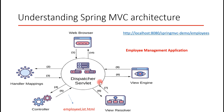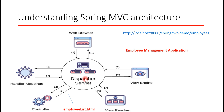In step six, the DispatcherServlet gives the view name to the View Resolver to get the actual view location. In step seven, the View Resolver identifies the actual view location and sends the view and extension back to the DispatcherServlet. In step eight, the DispatcherServlet gives the model and view to the view engine. In step nine, the view engine merges the view template with the model data and produces HTML, sending it back to the DispatcherServlet. Finally, in step ten, the DispatcherServlet sends the generated HTML back to the browser.